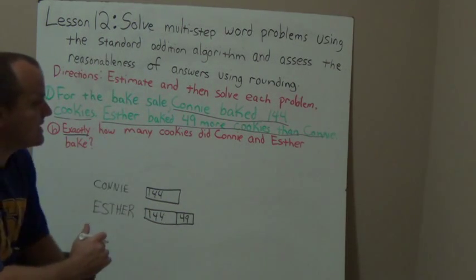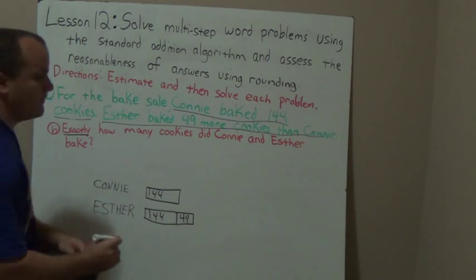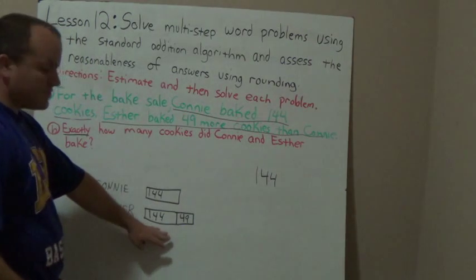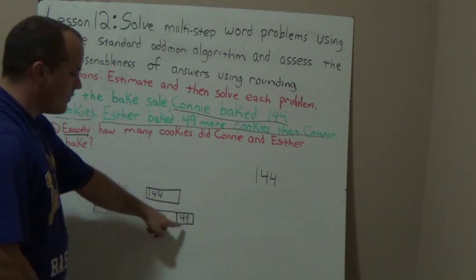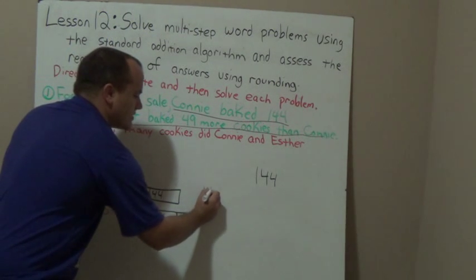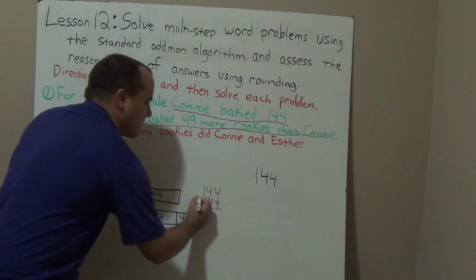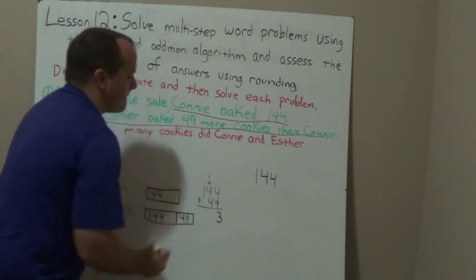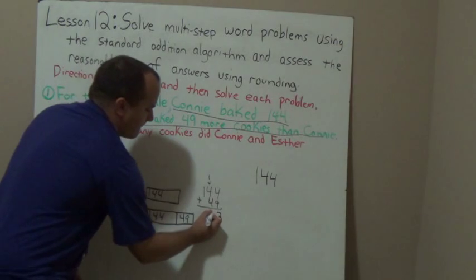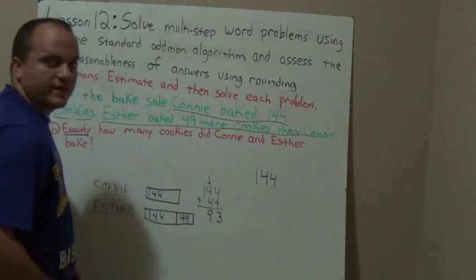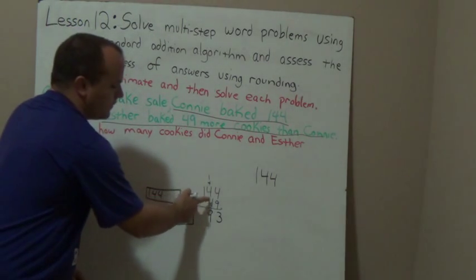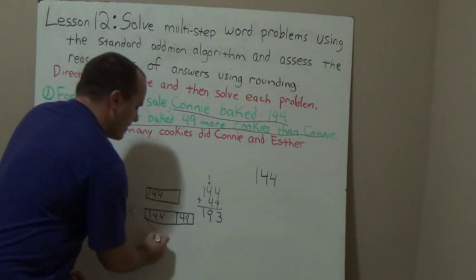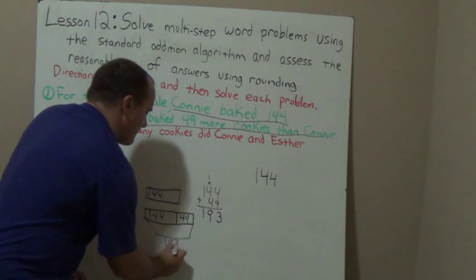Now I want to know exactly how many cookies did Connie and Esther bake. I know Connie baked 144 cookies. How many did Esther bake altogether? Well, if I have 144 and 49 more, let me do a quick addition problem: 4 plus 9 is 13, so I put my 3 down and carry my 1. 1 plus 4 is 5, and 5 plus 4 is 9. I don't need to carry because it's a one-digit answer — 1 plus 4 plus 4 gave me 9, so I dropped my 1 down. So Esther made exactly 193 cookies.